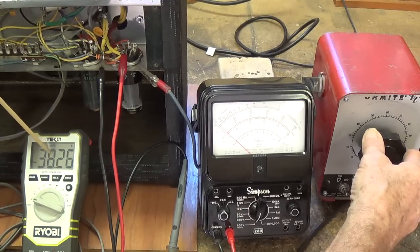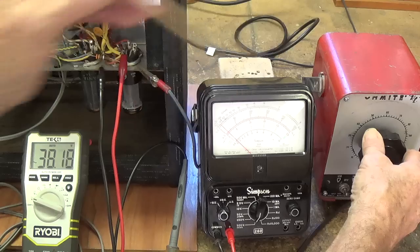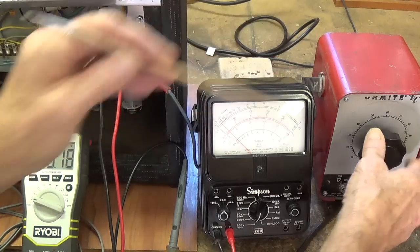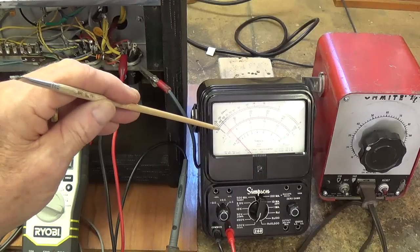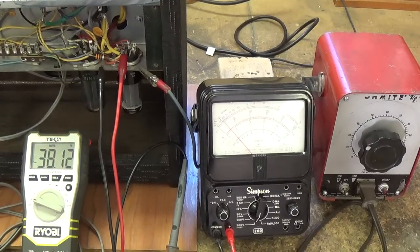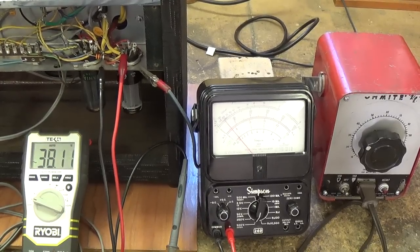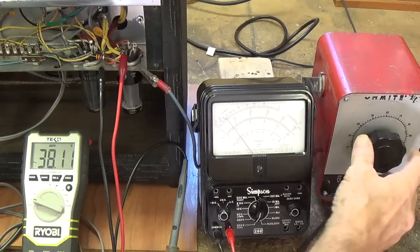I'm starting to see some deflection at about 37 volts. So when the variac is at 37 volts, if you notice I'm starting to get some B plus output from the 5Y3 rectifier. Now let's continue upward.